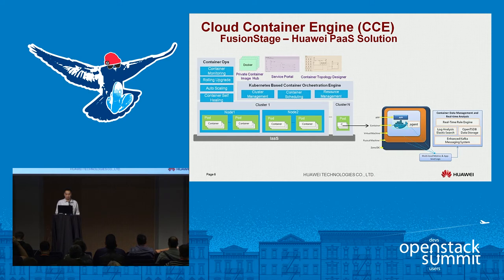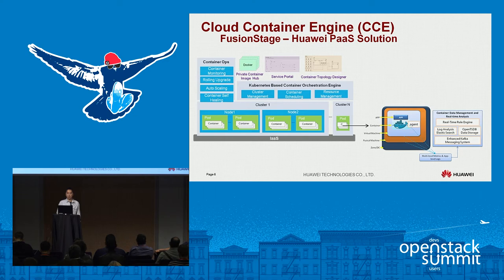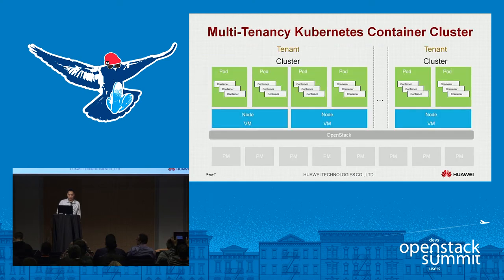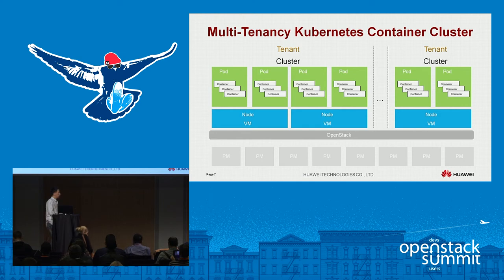Let's see how this makes multi-tenancy work. At the bottom, you can see we have cluster one through cluster N, each with a few nodes and pods — the Kubernetes concept you already know. In V1, if you want multiple tenants with security and isolation, the straightforward approach is: for each new tenant, create a new Kubernetes cluster.